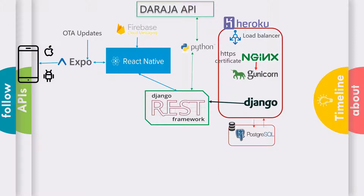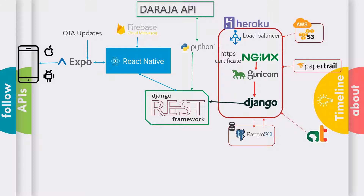If we have ten people doing transactions at the same time, we need to properly receive those requests in the cloud and communicate with our backend. As add-ons, we'll touch on Amazon S3 for saving images — like user profile pictures or product images if we build an e-commerce app. We'll also use Papertrail as a logging service for when servers crash, and Africa's Talking to send SMS confirmations alongside our push notifications.